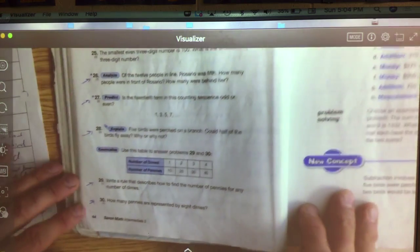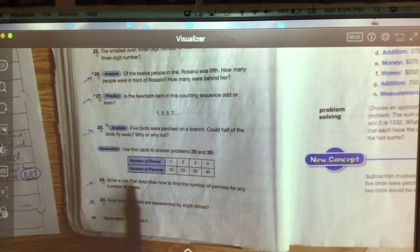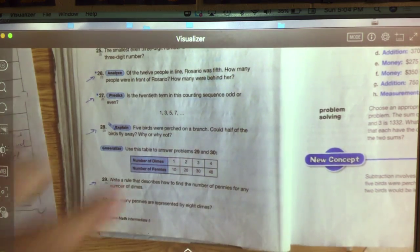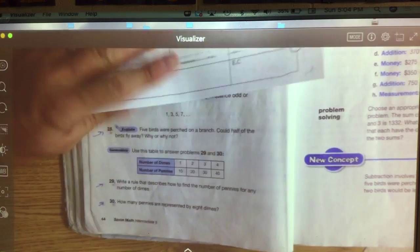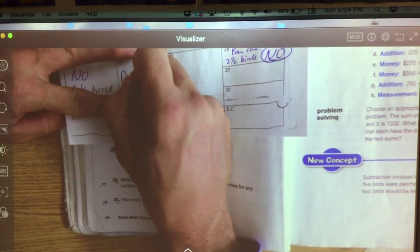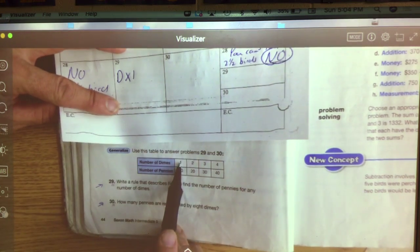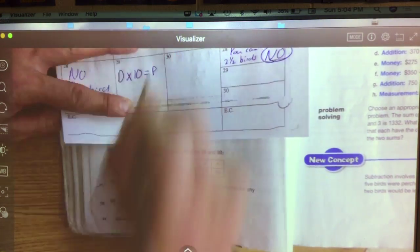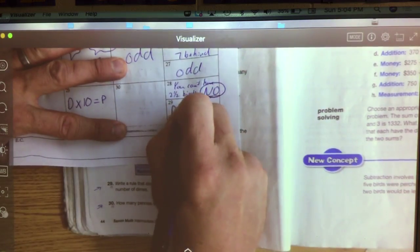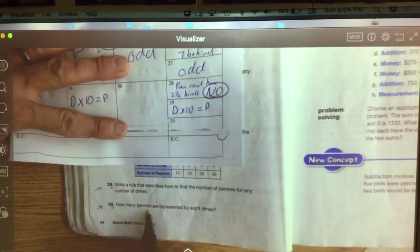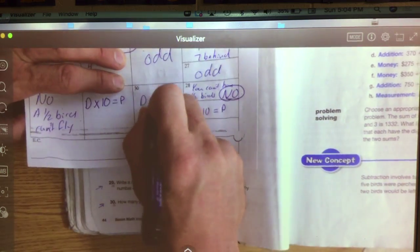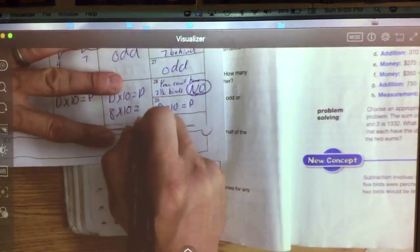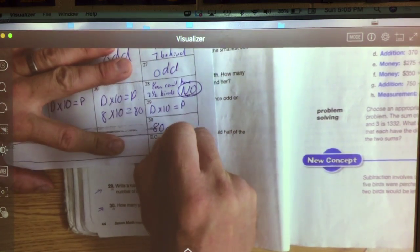My favorite problem, number 29 and 30. This time we're going to work with pennies for dimes. Write a rule that describes the number of pennies for any number of dimes. Pennies is going to be more than dimes, so you're multiplying. 1 times what equals 10, 2 times what equals 20, 3 times what equals 30. Dimes times 10 equals the number of pennies. And then it says how many pennies are represented by 8 dimes? So now you're just going to substitute. I have 8 dimes. 8 times 10 equals my pennies. And 8 times 10 equals 80. Do I need a label? Yes. Pennies.